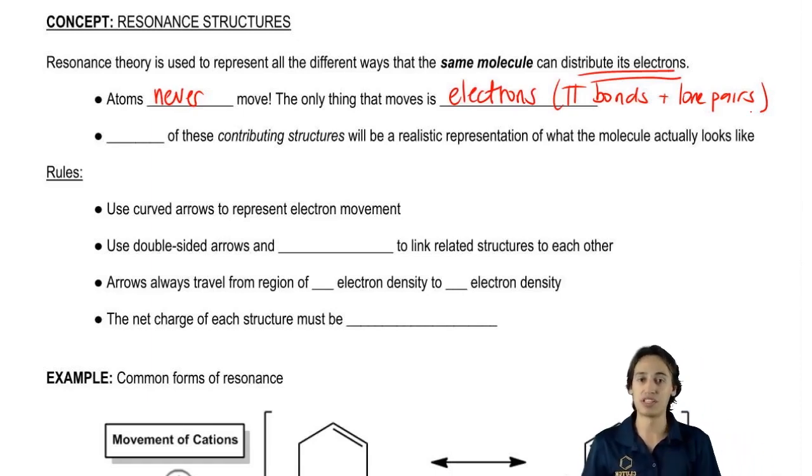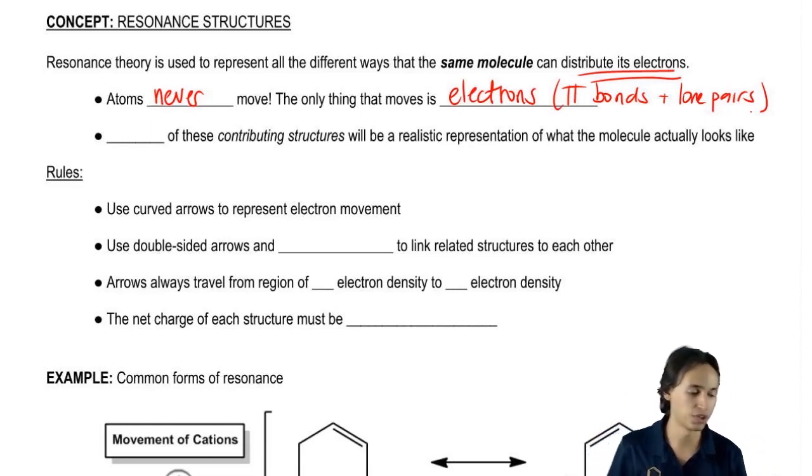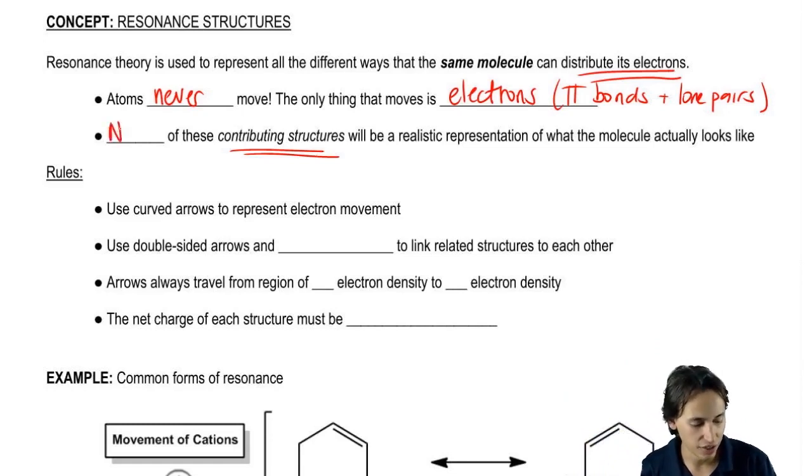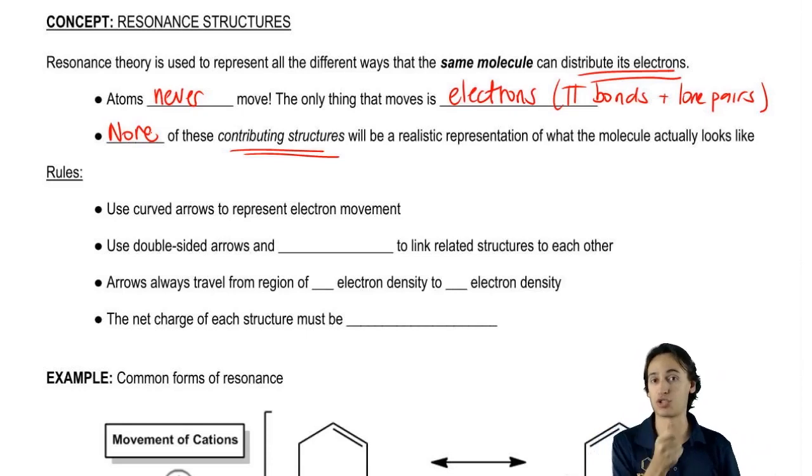Now something about resonance structures is we're going to find out that there's something called contributing structures. Contributing structures are structures that both contribute to the actual representation of the molecule because they average together. What we're going to find out is that none of these contributing structures are actually going to look like the actual molecule. The molecule is a blend of all the different possible resonance structures that a molecule can have.